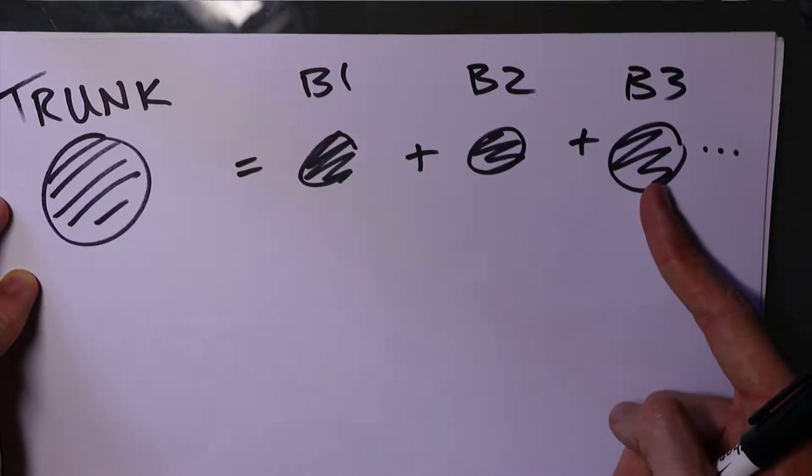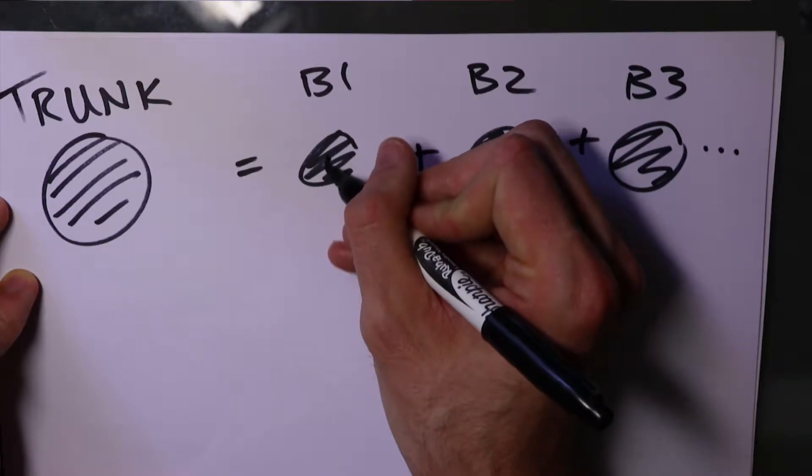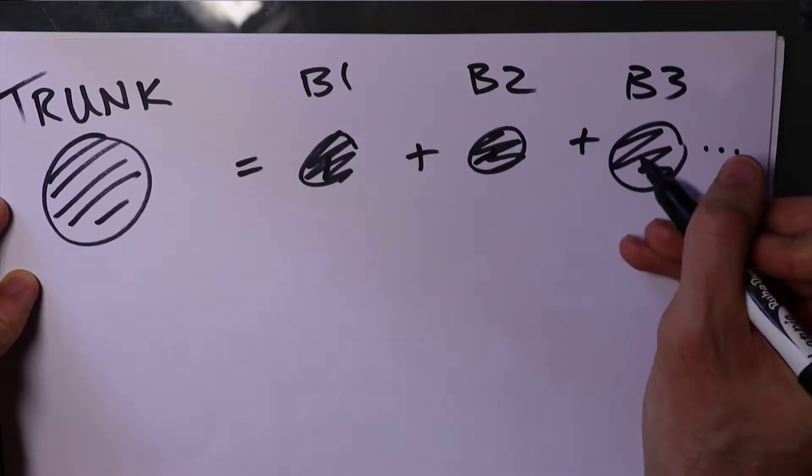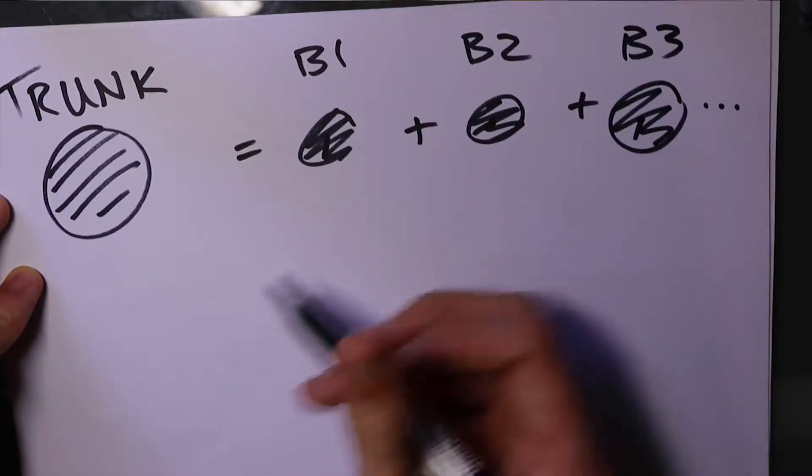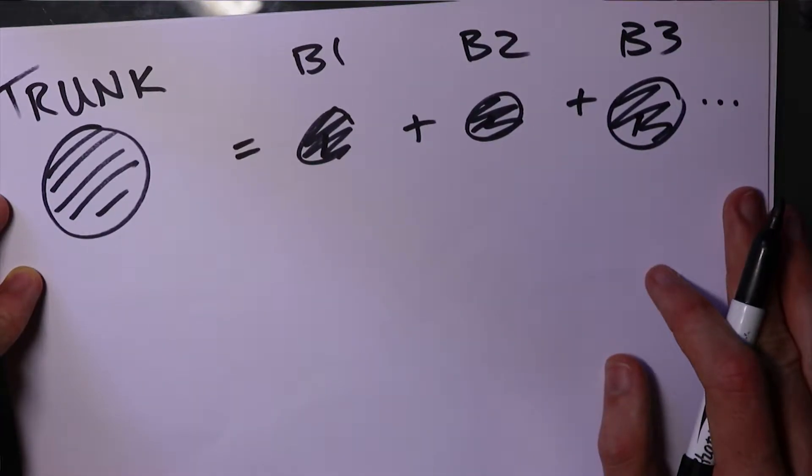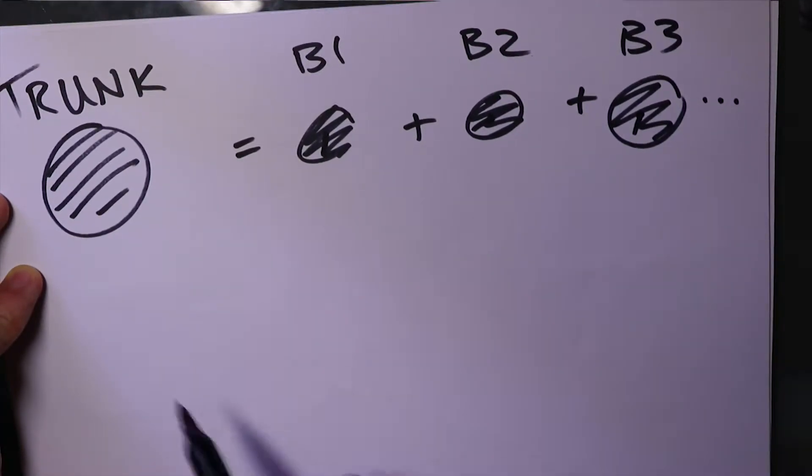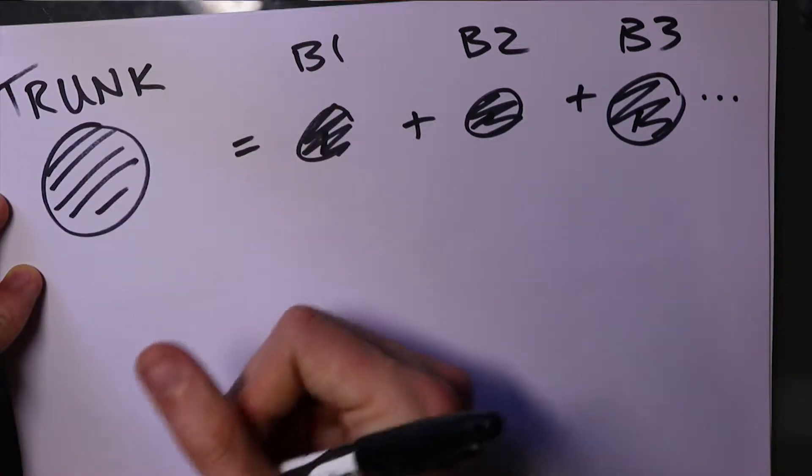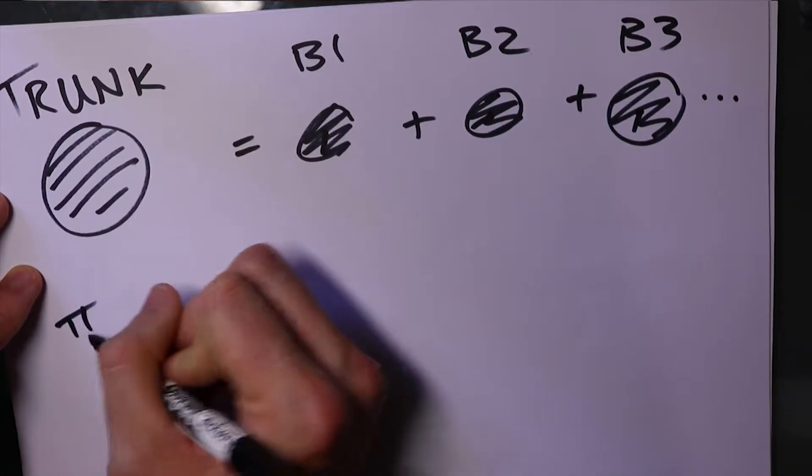So these don't have to be the same size. These can have a different length radius. Now mathematically, we're just going to approximate these to circles. So we're going to say that the area of a circle is just pi r squared.